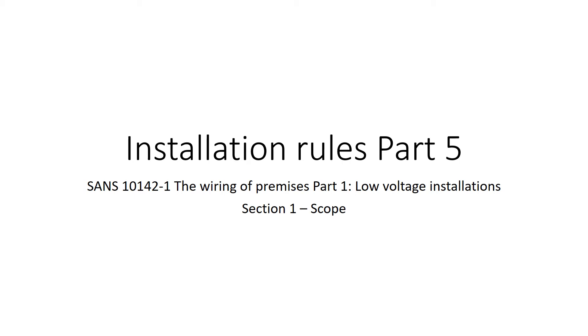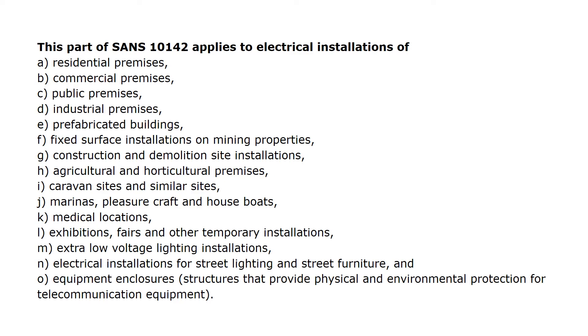Installation Rules Part 5 — SANS 10142-1: The Wiring of Premises, Part 1, Low Voltage Installations, Section 1. Section 1.1: Application of this part of SANS 10142. This part of SANS 10142 applies to electrical installations of the following premises types.